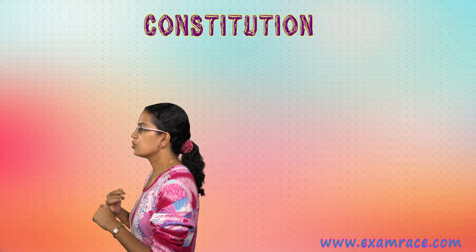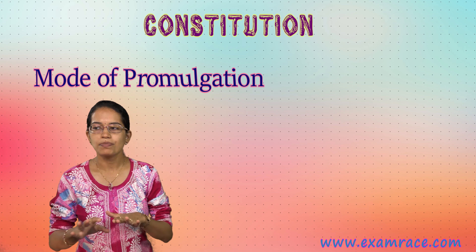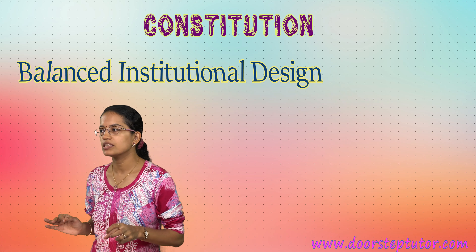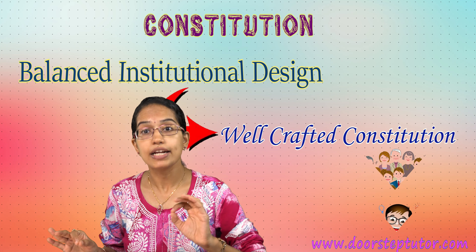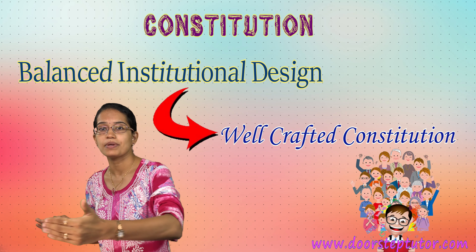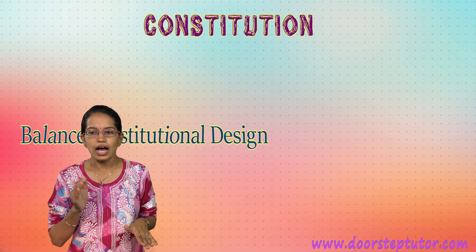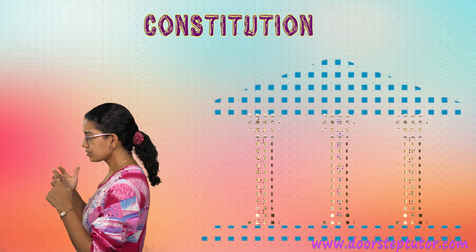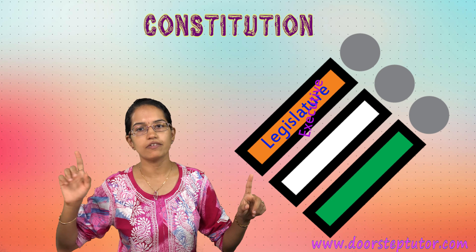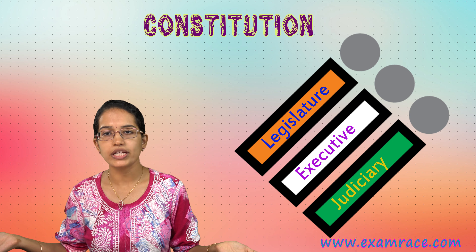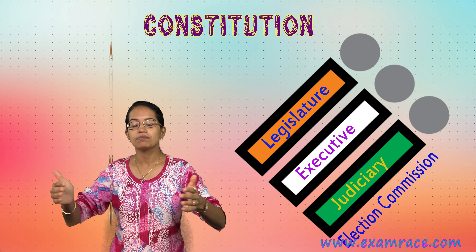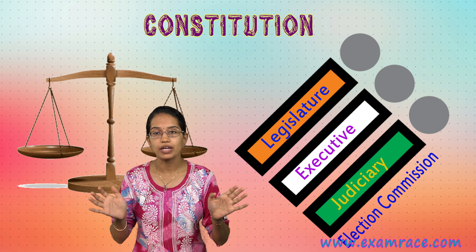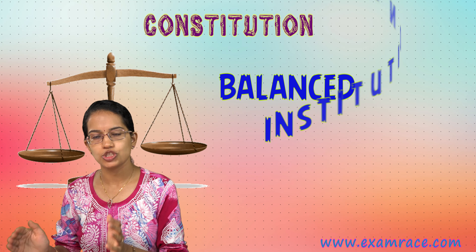When we talk about the constitution, the mode of promulgation is very important — how provisions are maintained — and a balanced institutional design is essential. A well-crafted constitution is given by intellectual people who have worked closely with common people, understanding their needs. The idea is that no single institution should acquire a monopoly. We bring in all three pillars — the legislative, executive, and judiciary — on a par. These three pillars, along with independent bodies like the Election Commission, bring in a system that balances and brings good success to the Indian constitution.